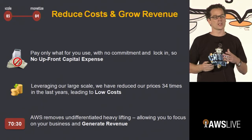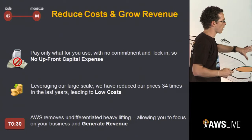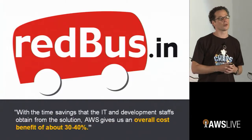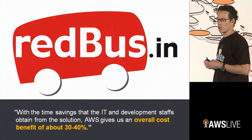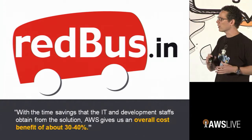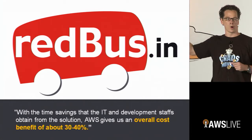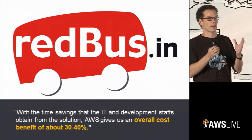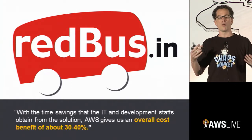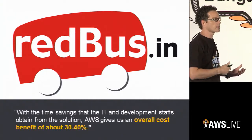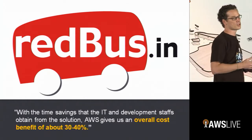The cost topic has been mentioned a lot. The customer Redbus — a very successful Amazon customer in India — realized about 30% to 40% savings by leveraging AWS. What I like about the quote from their founder is that they didn't just compare a single physical server with AWS, but looked at the overall experience — how they could save time in IT, development, and staff costs. Look at it holistically and you'll be able to generate a lot of savings.